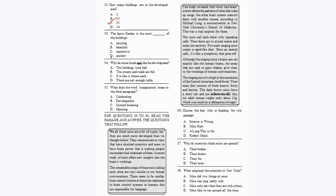Question 33: 'The spice garden is the most dash of the buildings' — the answer is 'ancient.' Question 34: Why do some locals not like the development? Because it is like a theme park, which is why locals don't like it. Question 35: What does the word 'inauguration' mean in the final paragraph? It means 'opening' — option D. This completes the first passage.